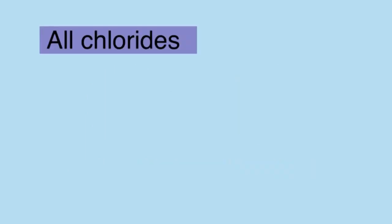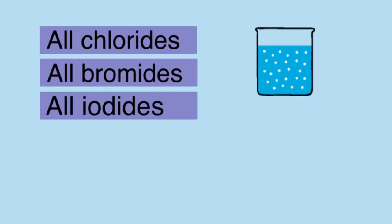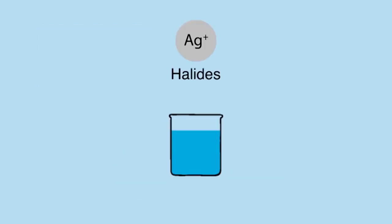All chlorides, bromides, and iodides are soluble, except for lead and silver. Remember that because silver halides are insoluble, we use this to test for the presence of halides.